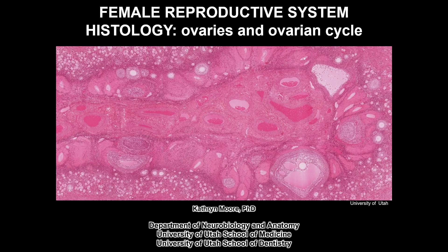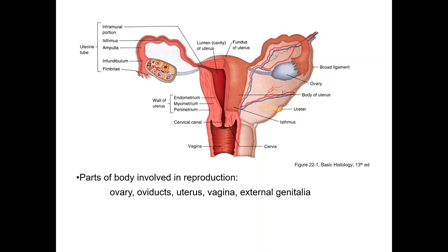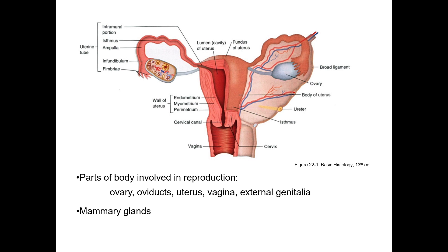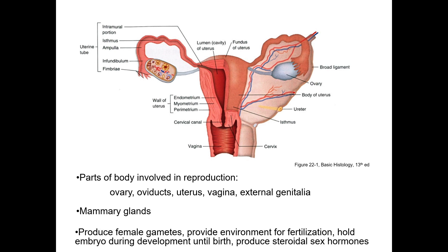This video is the first in a series of three about reproductive histology and physiology, and one of two that focuses on the structural and functional features of the female reproductive system. The female reproductive system consists of the ovaries, uterine tubes, uterus, and vagina, while the mammary glands are important for nourishment of offspring but are not considered reproductive organs per se. These organs function to produce the female gametes, provide an environment for fertilization, hold the embryo until birth, and produce steroidal sex hormones.